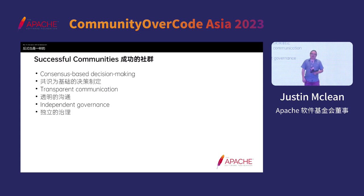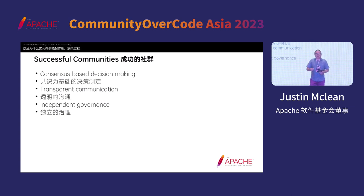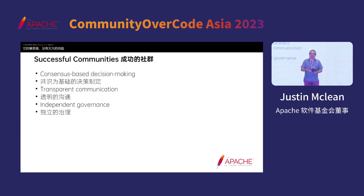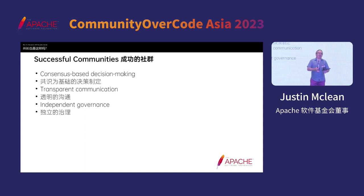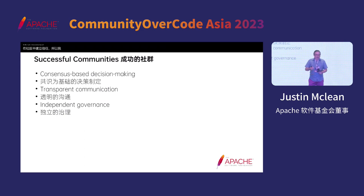And it's the same with transparent communication — this also builds trust within the community. The way those two things work with decision making means the steps or changes that are made are small reversible steps. There's not a big risk in making a small change because it can always be undone. With the governance, because the project itself governs the project, that also builds trust. The main thing about Apache values coming together is that it builds a community that respects and trusts each other.